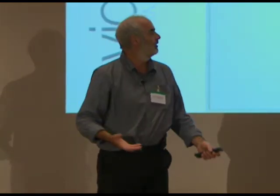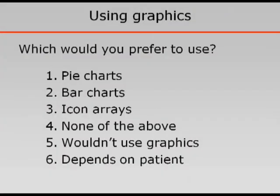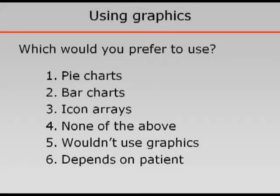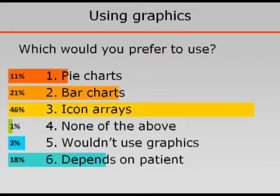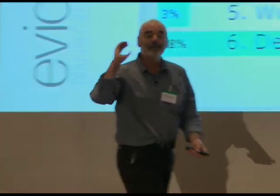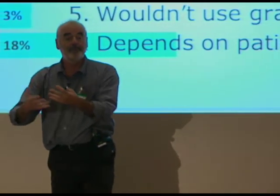Quick question: if you had to communicate that kind of information about statin risk using graphics, what would you prefer? Pie charts, bar charts, icon arrays, none of the above, or depends on the patient? Icon arrays are the most popular here — pie is not very popular. On randomized trials, icon arrays come out better than bar charts on the whole. This is very good information.